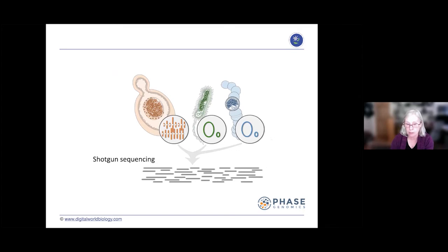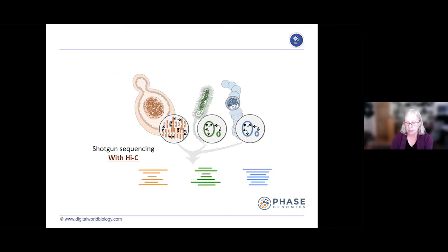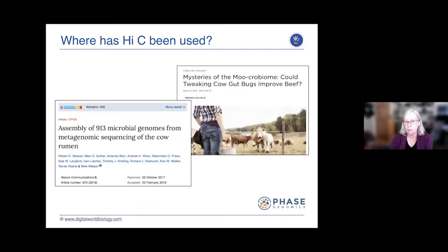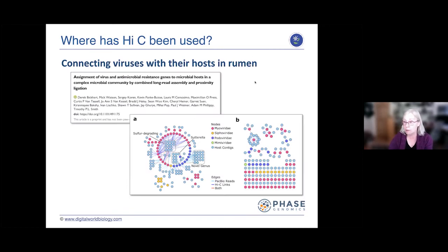For a microbiome sample, you cross-link everything before you digest it and chop it up. That lets you figure out which pieces of DNA came from the same cell, which helps you assemble genomes from a mixed sample. In shotgun sequencing, you can sort all the pieces: these came from yeast, these from this bacteria, these from that bacteria. This technique has been used to study mosquito genomes related to the Zika virus, and microbiomes of cows — finding 913 different microbial genomes in a single cow.